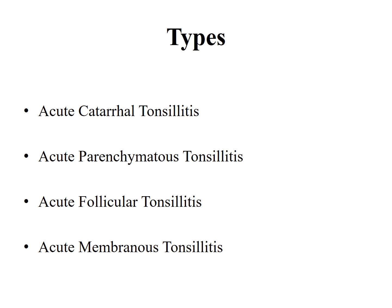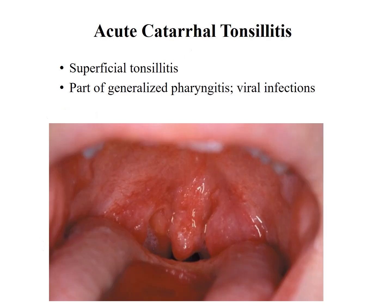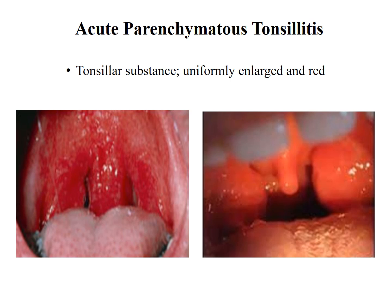Acute tonsillitis is further classified into four subtypes: acute catarrhal tonsillitis, acute parenchymatous tonsillitis, acute follicular tonsillitis, and acute membranous tonsillitis. Acute catarrhal tonsillitis, also known as superficial tonsillitis, is where the tonsillitis is part of a generalized pharyngitis and is mostly seen in viral infections.